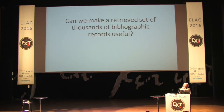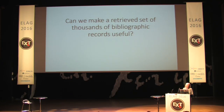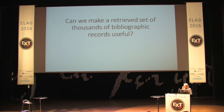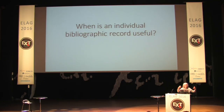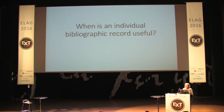Another question is: can we make a retrieved set of thousands of bibliographic records useful? One of our problems today is the sheer size of our catalogs — the problem is much different from what someone faced in the book catalog or even card catalogs. How do we make this a usable machine? And when should we be showing users the actual bibliographic record? In the card catalog, users went through looking at headings, looking at see-also references, finding where they were before they drilled down to the bibliographic record. Can we figure out at what point that's useful for them?